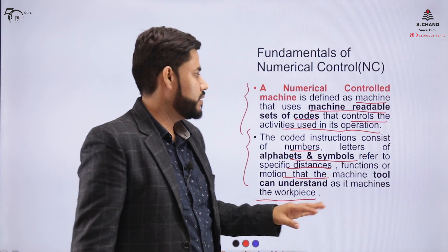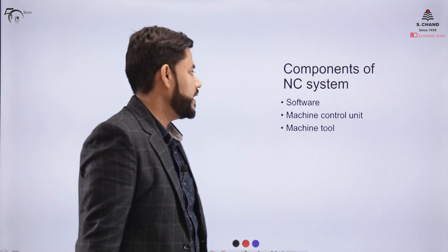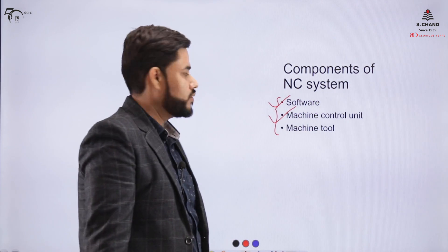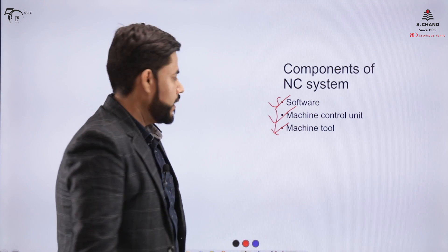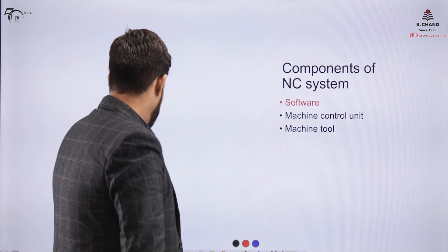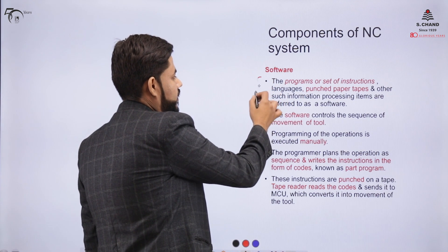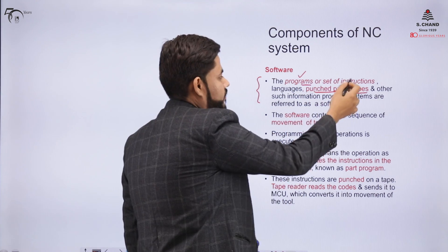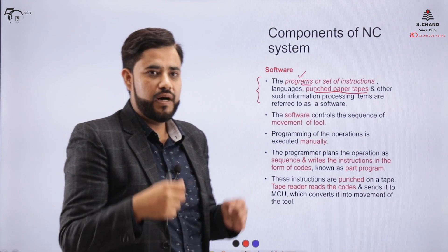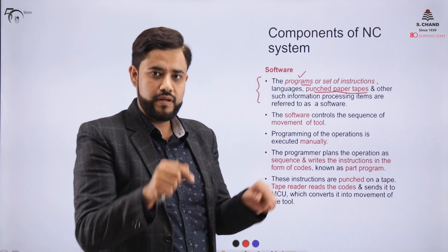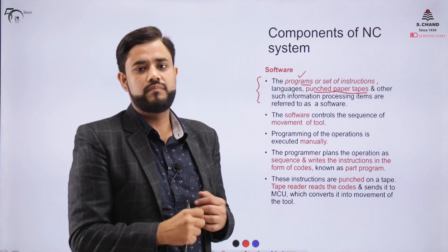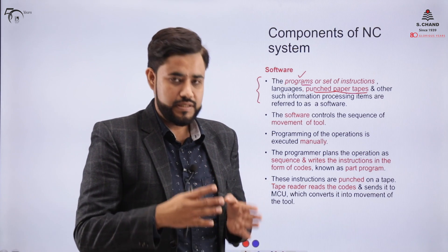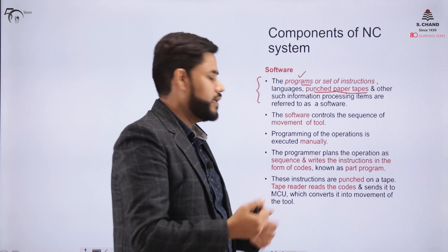NC is essentially numeric control that uses machine-readable codes, and a program controls the activities of its operations. The NC system has three components: software, MCU (Machine Control Unit), and the machine tool. The software is the set of programs or part program that is punched in the form of a tape, which is then inserted into the machine's control unit.